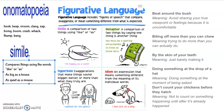Boys and girls, today we're going to learn about figurative language. Figurative language is a tool that authors use to help us visualize what we're reading. It helps us think about it and put pictures to what they're actually saying. Most of the time, the figurative language that is used doesn't actually mean exactly what it's saying, but it's put in there to bring out emotions or to help you see and understand what you're reading.